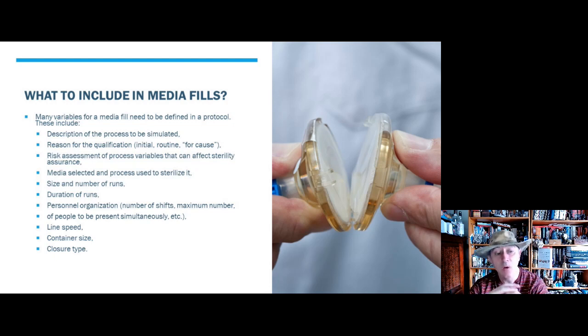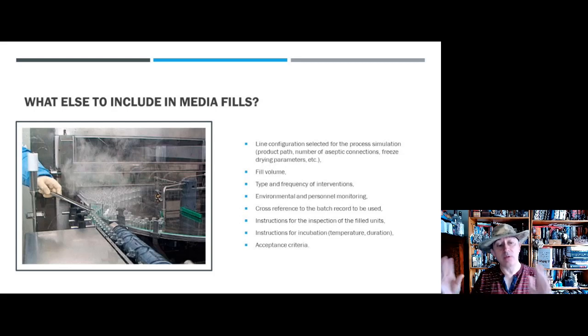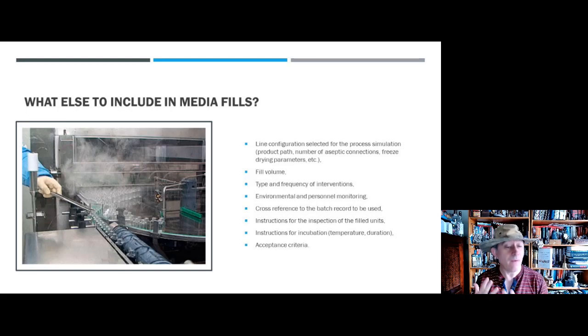I need to make sure that things like line speed, container sizes, and closure types are either representative or they're representing worst-case conditions. We also need to make sure we set the line up as normal. We're not doing something special for a broth; we're doing something that is a representation of a normal filling process.